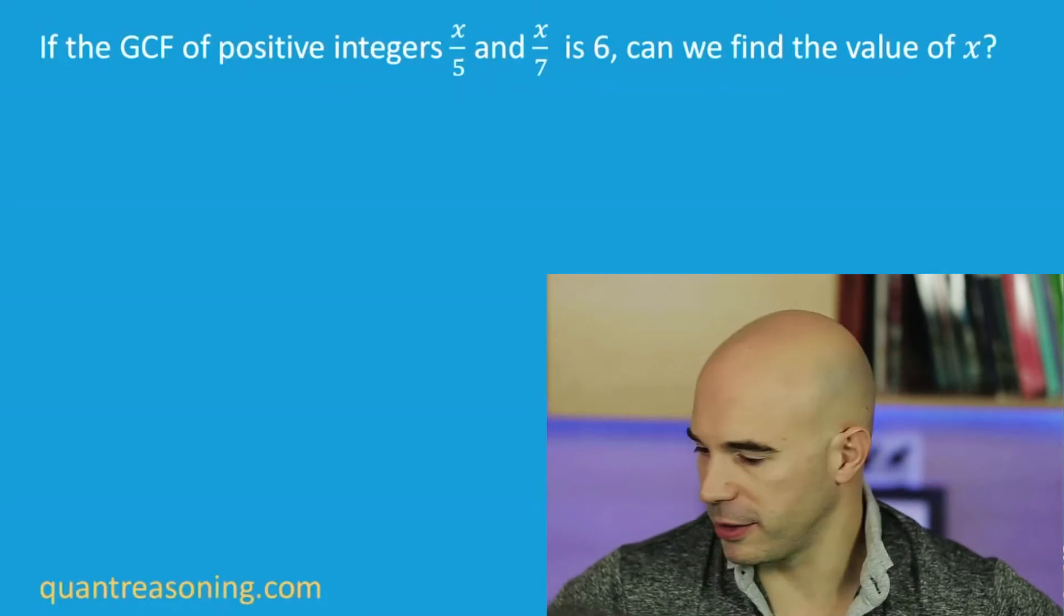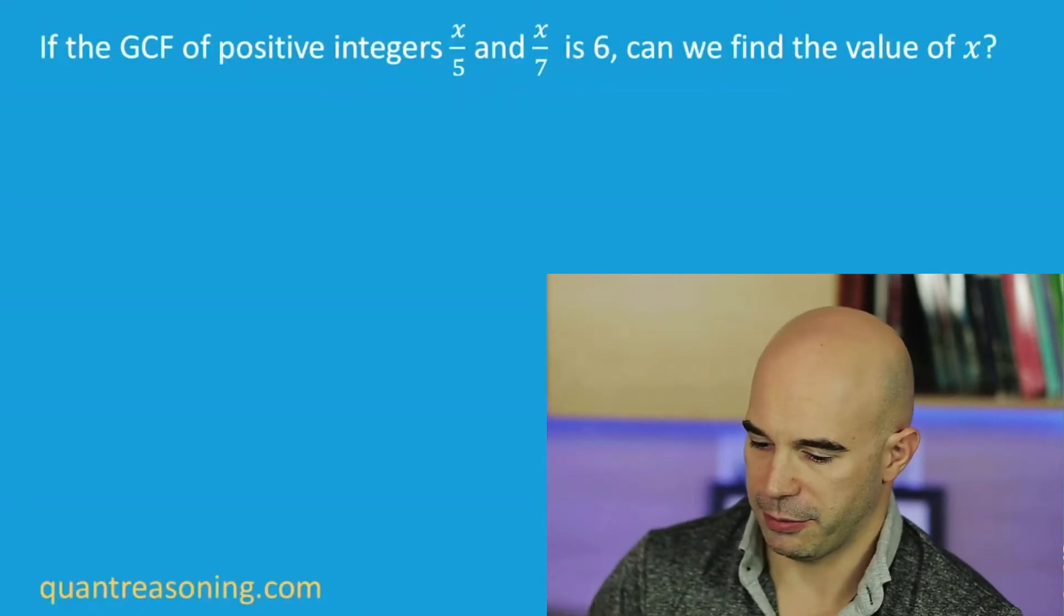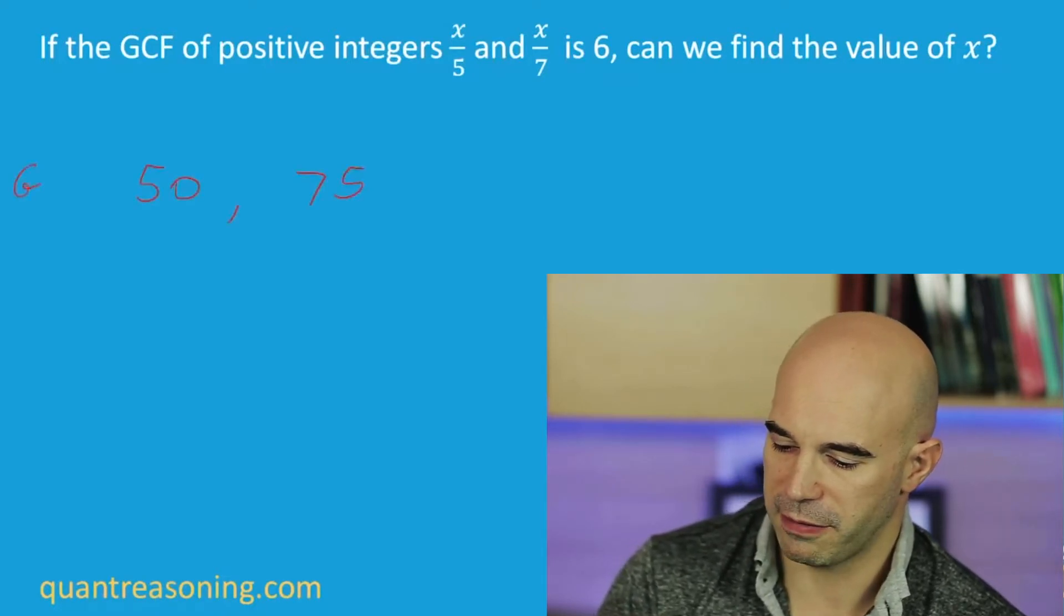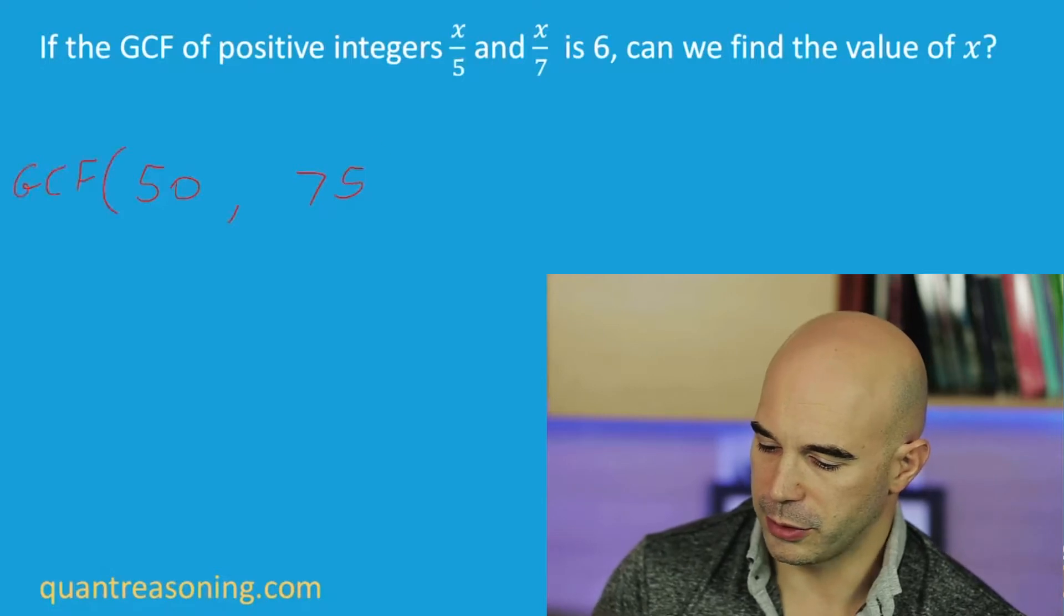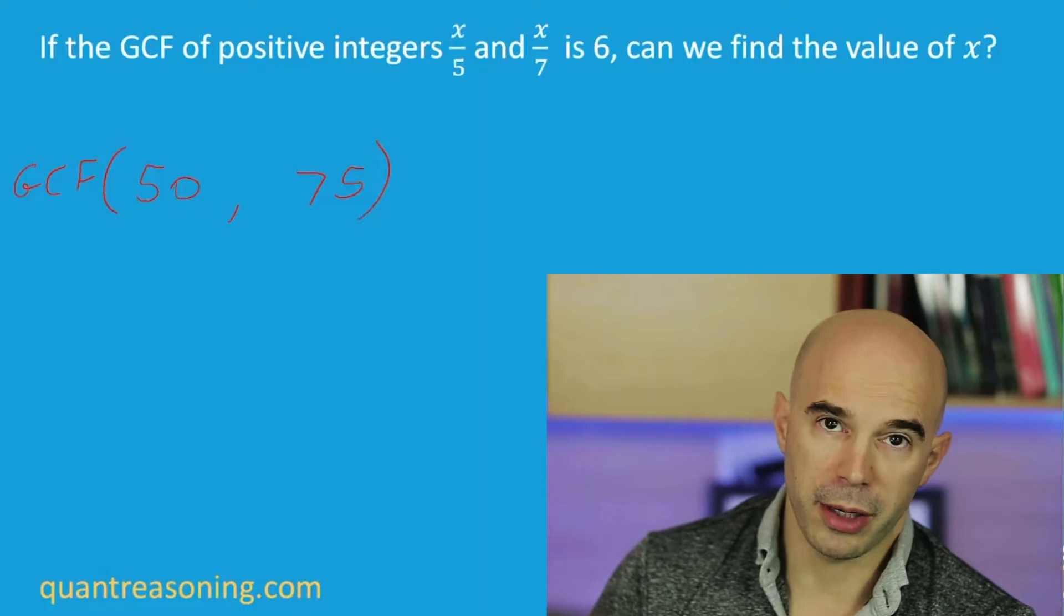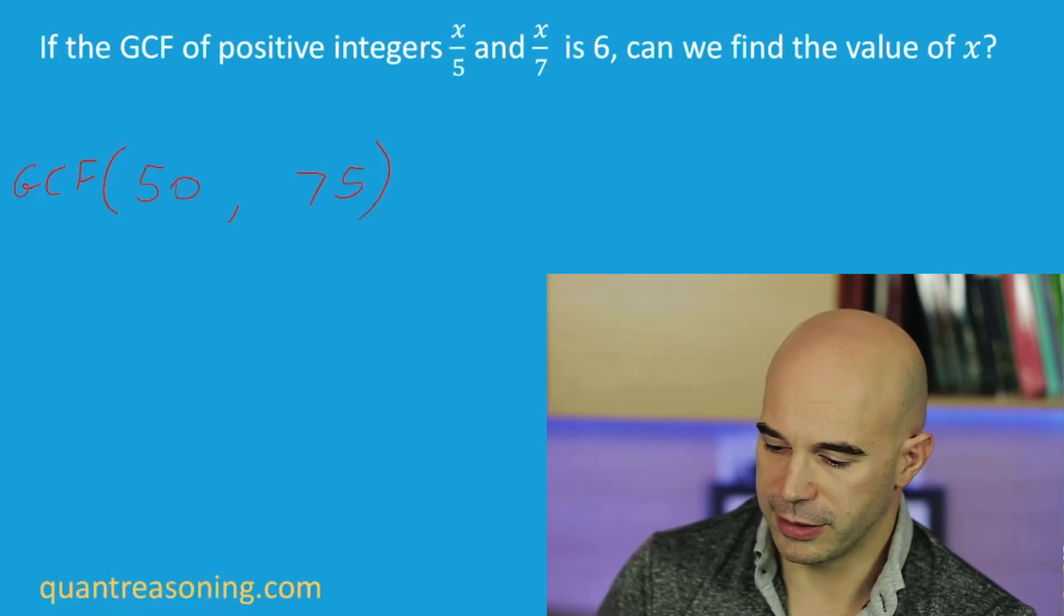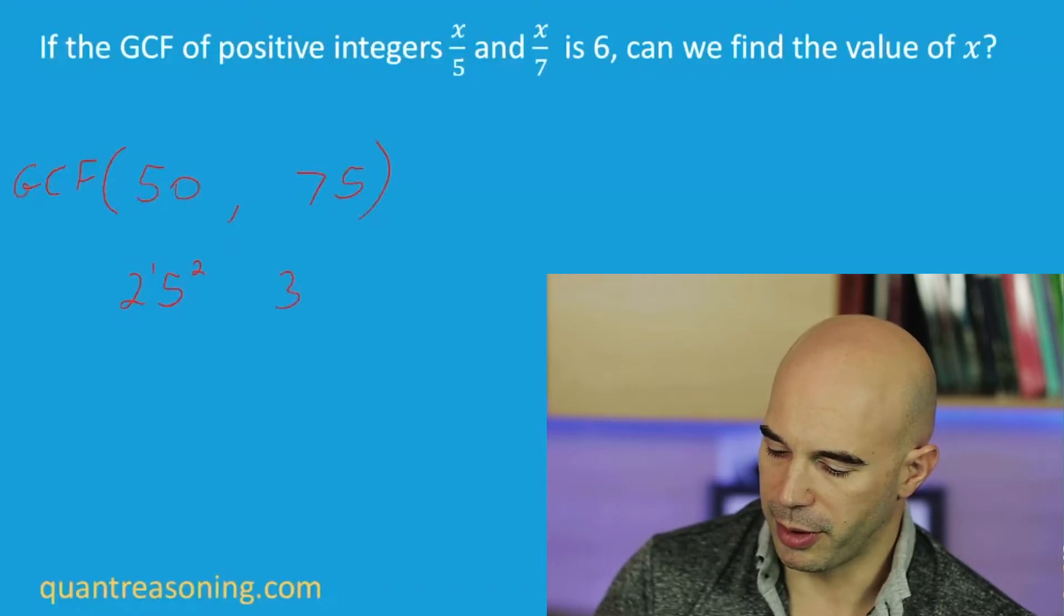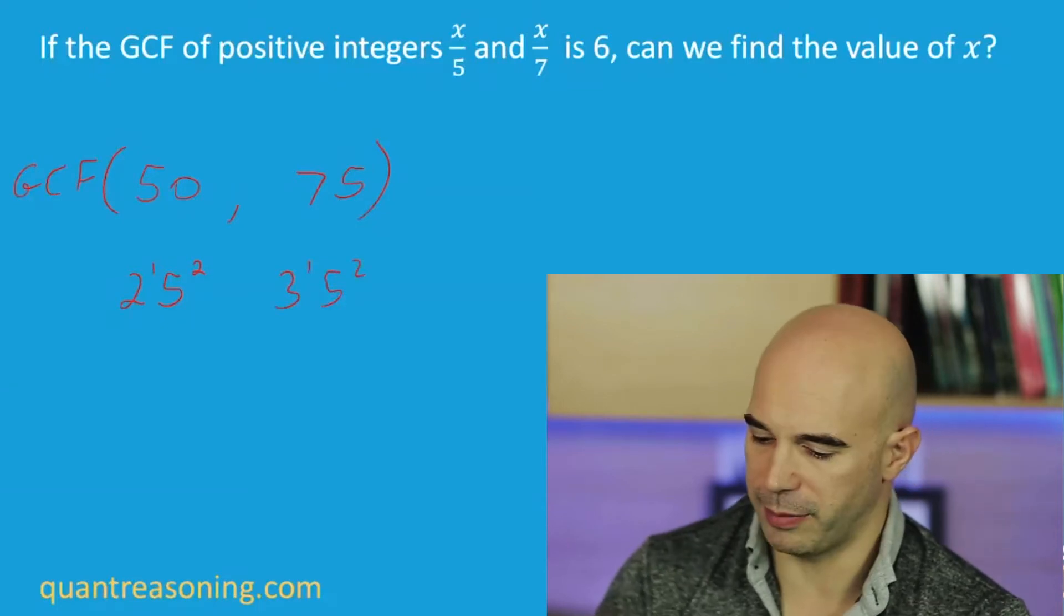How should we think about greatest common factor? Let's take an example. If we say 50 and 75, and I want to know what's the greatest common factor of those two numbers. One way to solve that is to find the prime boxes of 50 and of 75. So 50 would be 2 to the power of 1, 5 squared, and 75 would be 3 to the power of 1, 5 squared.